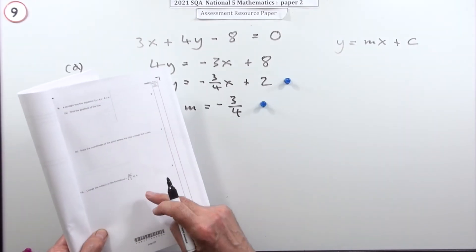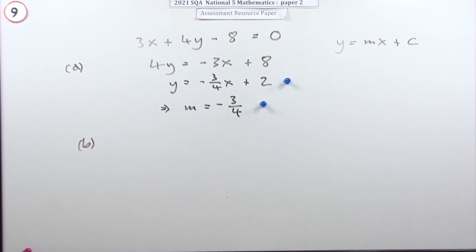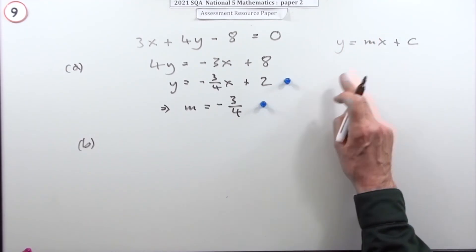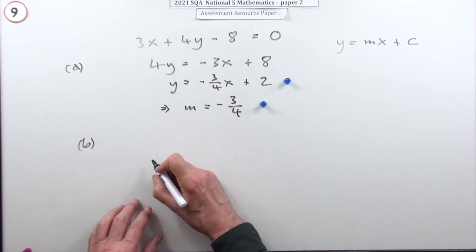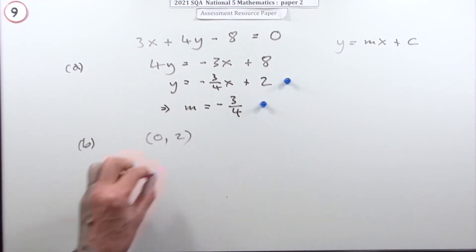Part b just follows on: state the coordinates the point where the line crosses the y-axis. Well it cuts the y-axis at the number at the end - that's the y-coordinate. When x is zero you're left with y is two. But it said state, so I know what happens at zero: that's (0, 2), and that was a mark.